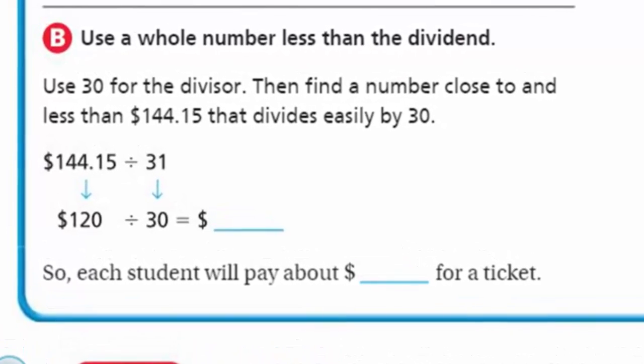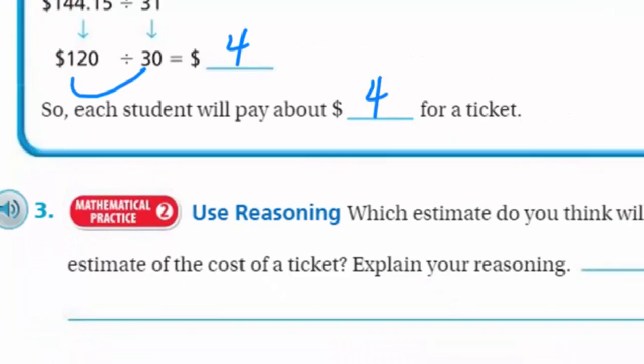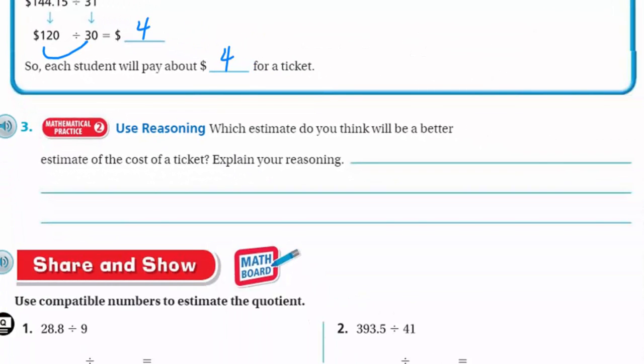Part B: use a whole number less than the dividend. Use 30 for the divisor, then find a number close to and less than $144.15 that divides easily by 30. 120 is lower than 144, but we still have two compatible numbers, the 12 and the 3, very compatible. It gives us 4, so that means each student will pay about $4 for a ticket.